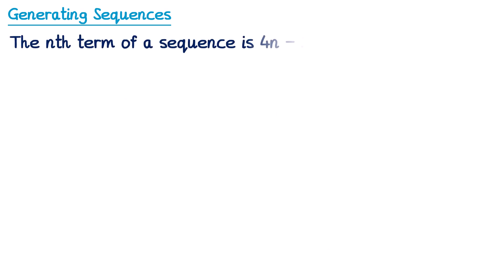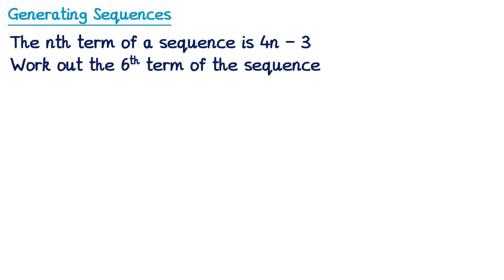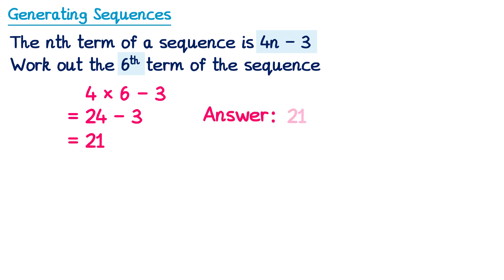Now we'll try a more difficult question. This time the nth term of the sequence is 4n minus 3, and we're going to work out the sixth term of the sequence. We've got this minus 3 on the end, but we're still going to do exactly the same thing — we want the sixth term so we substitute n for 6. So instead of 4n, it's 4 times 6, but we've also got this minus 3 on the end. We do 4 times 6 first, which is 24, and then subtract 3. 24 subtract 3 is 21, so the answer is 21.